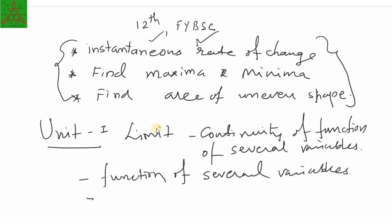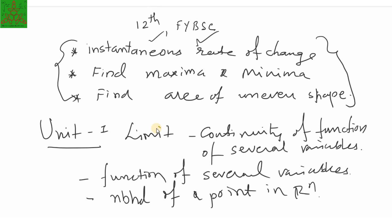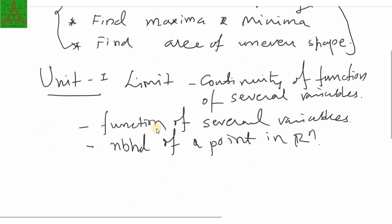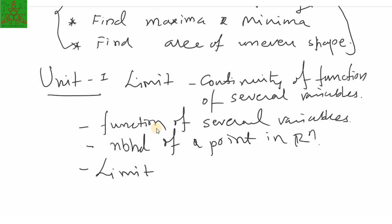Functions of several variables — that is the first introduction we are going to discuss. Next, we discuss neighborhoods of a point in Rn. Rn means n-dimensional space. R-squared is the two-dimensional space and R-cubed is three-dimensional space; similarly we have n-dimensional space. Then we will talk about the limit of functions of several variables. We already know the limit of functions of one variable, and here we learn continuous functions for many variables.